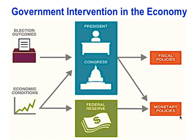When we think about government intervention in the economy, the things that will dictate what government does are politics and election outcomes, but also the economic conditions. Election outcomes will choose President and Congress. The economic conditions will influence the behavior of President and Congress, but also the Federal Reserve, which is a quasi-government agency — semi-independent from the government.